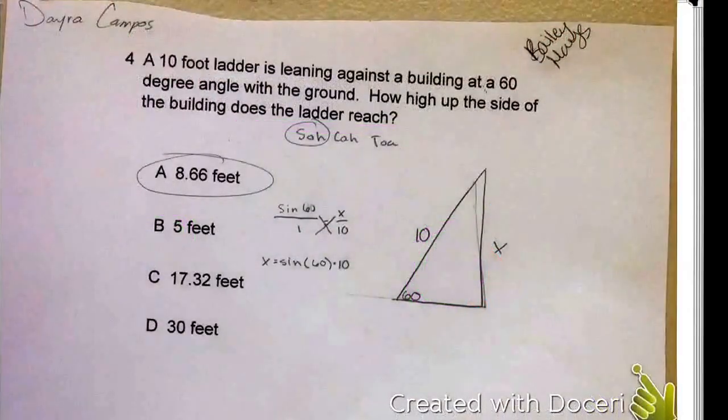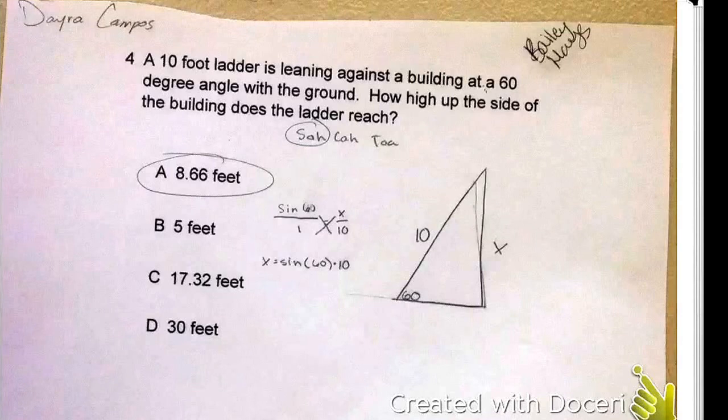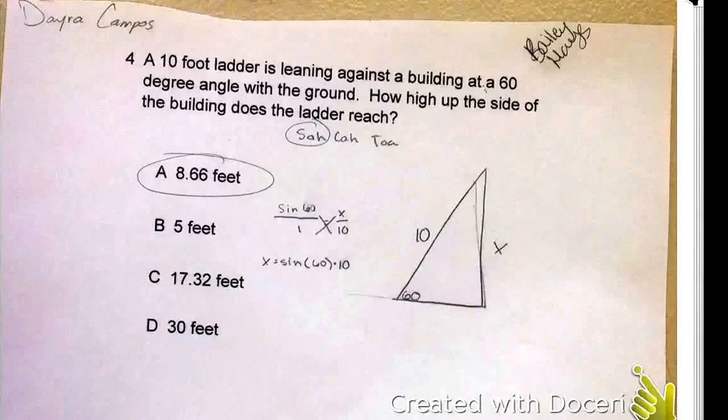How high up the side of the building does the ladder reach? So then you would draw a triangle and you put x and then 10 on the hypotenuse and 60 because it says 60 degree angle with the ground. And then you would pick sine, and then you put sine 60 over 1 equals x over 10.